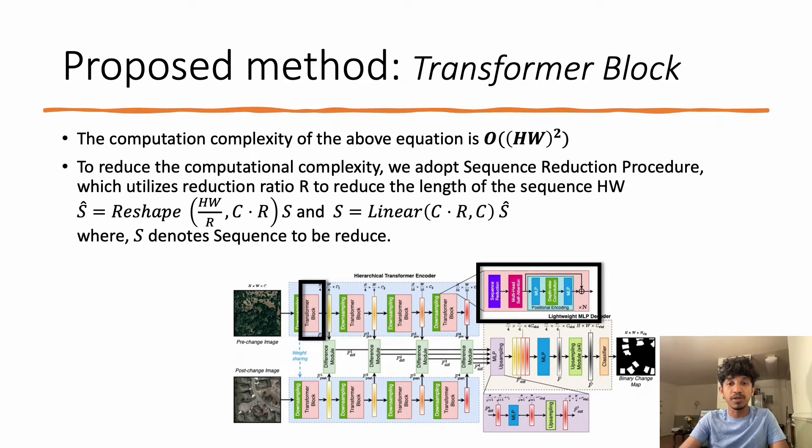This prohibits its application on high-resolution images. To reduce the computational complexity, we adopt the sequence reduction process, which utilizes the reduction ratio R to reduce the length of the sequence HW. Here S denotes the sequence to be reduced.